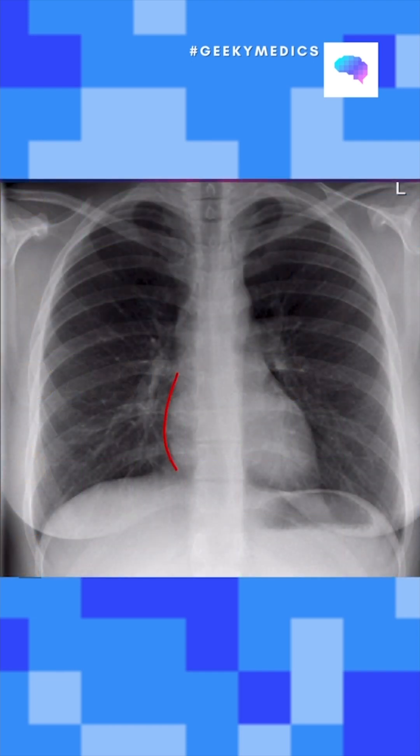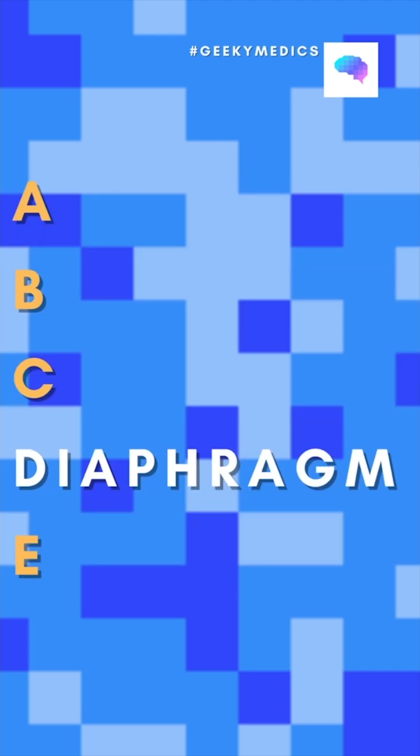C is for cardiac. We want to look at the left and right heart borders and compare the cardiothoracic ratio, making sure it's under 50%.